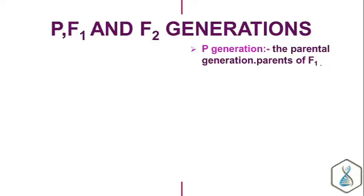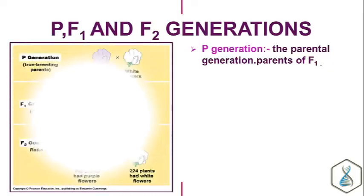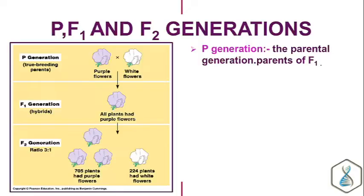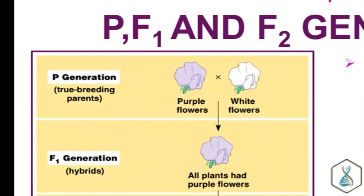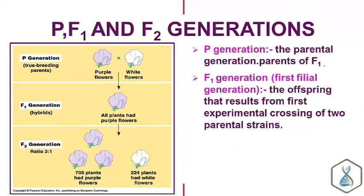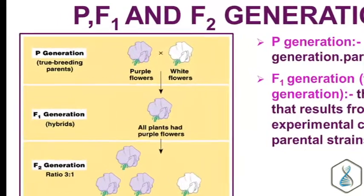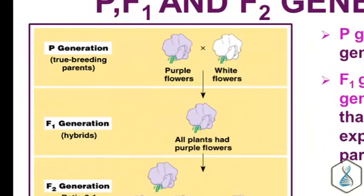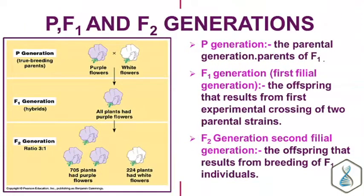What are P, F1, and F2 generations? The pure-breeding parental generations are called P generation. These parents are pure-breeding because they are homozygous for a trait — for example, homozygous for purple flowers or homozygous for white flowers. F1 generation refers to the offspring from the P generation — when we cross two pure-breeding individuals, we obtain the first filial or F1 generation. F2 generation refers to the offspring that result from crossing F1 individuals, also called the second filial generation.